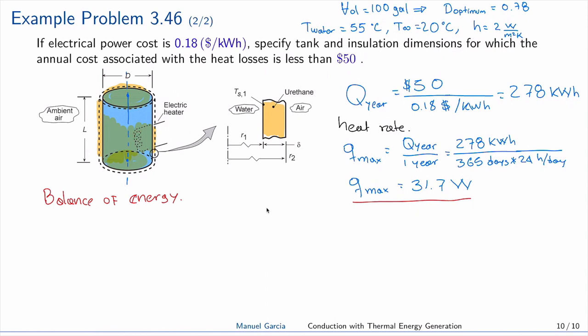Our control volume will be just the urethane because we know the temperature at this point. On the outside we have convection with ambient air at temperature 20 C. The energy lost through the walls came from the water and is released to the air. The walls we have are the side walls and the top and bottom.